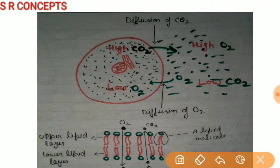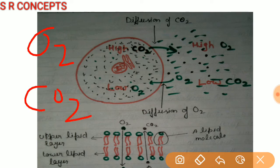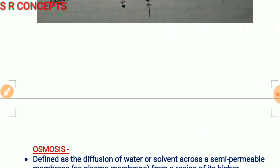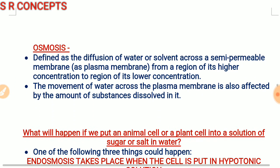Not only oxygen and carbon dioxide, but many other small molecules like glucose, amino acids, and ions such as sodium, chloride, and bicarbonate ions are also moving in and out of the cell by the process of diffusion.